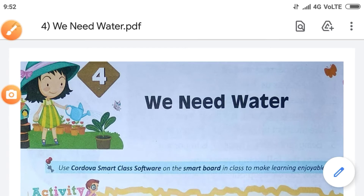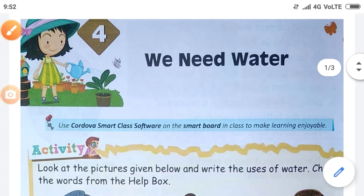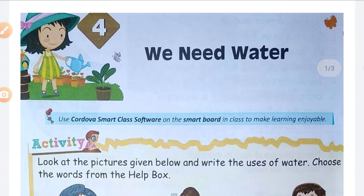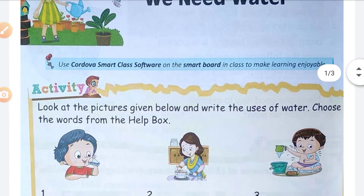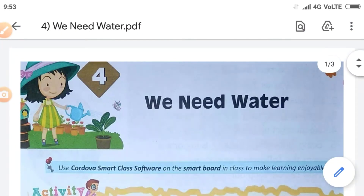We have completed our lesson, that is 'We Need Water.' In this lesson we have learned various information — the types of sources, which one is the main source, why water is very essential, why we have to save it, and how we have to save it. All these things we have learned in this lesson.